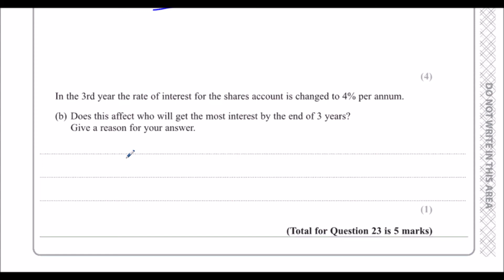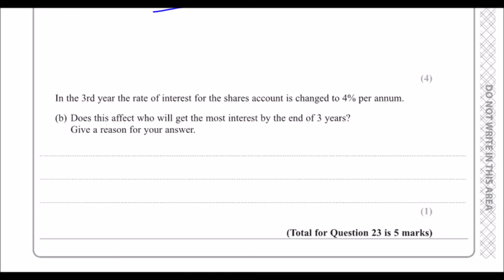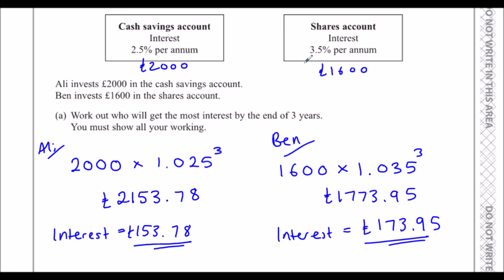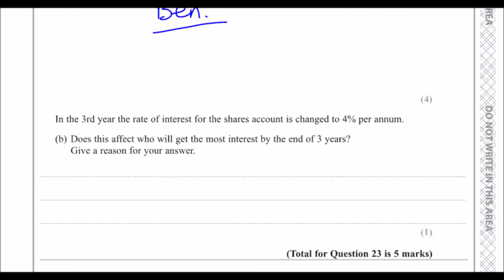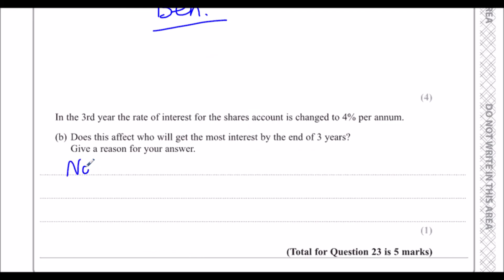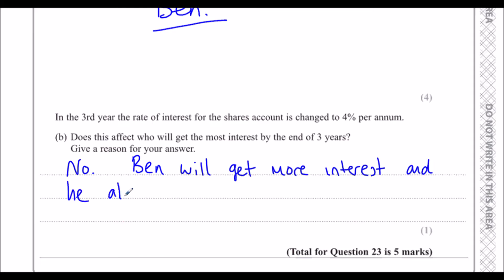In the third year the shares account rate changes to 4%. Does this affect who gets the most interest? No — Ben will get even more money since the rate increased, and he already had more interest than Ali, so it won't change who gets the most.